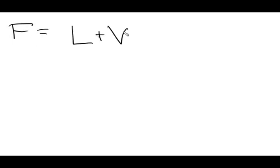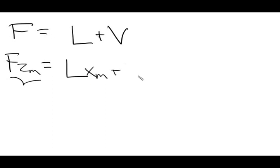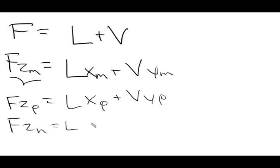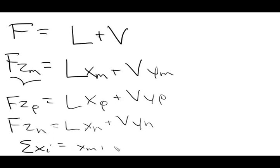We need to build a system of equations. First, a total mole balance: total moles in equals total moles out, so F equals L plus V. For each species, the feed rate times the mole fraction in the feed equals the liquid flow rate times the liquid mole fraction plus the vapor flow rate times the vapor mole fraction. So F·Z_M = L·X_M + V·Y_M, F·Z_P = L·X_P + V·Y_P, and F·Z_H = L·X_H + V·Y_H. We also know that the sum of liquid mole fractions X_M + X_P + X_H equals 1, and similarly for vapor mole fractions.